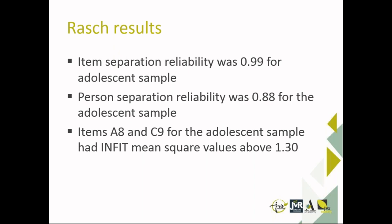The person separation reliability was 0.88, similar to Cronbach's Alpha, indicating how well individuals' levels of ability were estimated — again, very satisfactory. Two items for the adolescent sample had an infit mean square value above 1.3, indicating some unpredictable responses to those two items given their location on the general deductive ability scale. However, there was no pattern of concern.